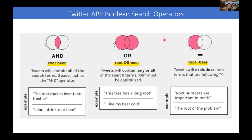What you want to learn is some basics of Twitter search, and the basics include boolean operators. For example, if you search for tweets that include two keywords — like 'root beer' — you have to use the boolean operator AND. You don't have to explicitly type 'root AND beer' in the Twitter search box, because any space between two words, Twitter will interpret as AND. So you just type 'root space beer' and it will return tweets containing all of the search terms.